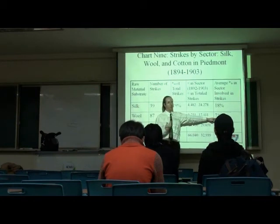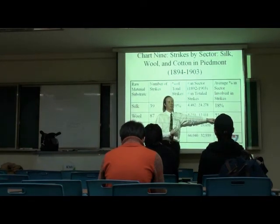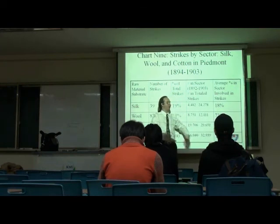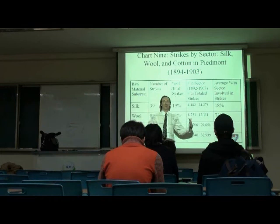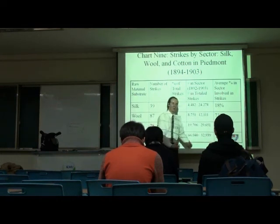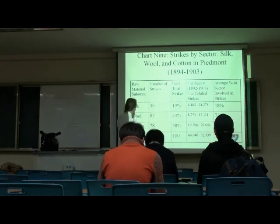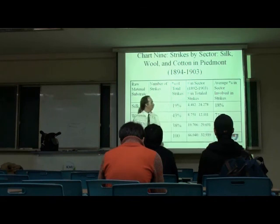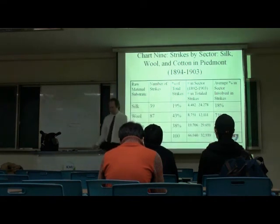wool, more decentralized, is more contentious. Just have to think about that. Instead of a large hierarchy creating contention, contention is on the decentralized level. The cotton has some of the lowest, or lower strikes, and is more consolidated.